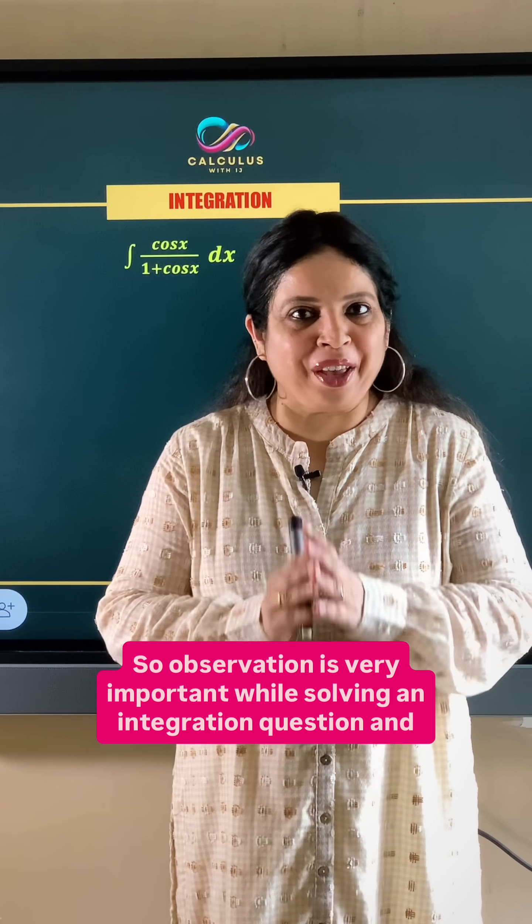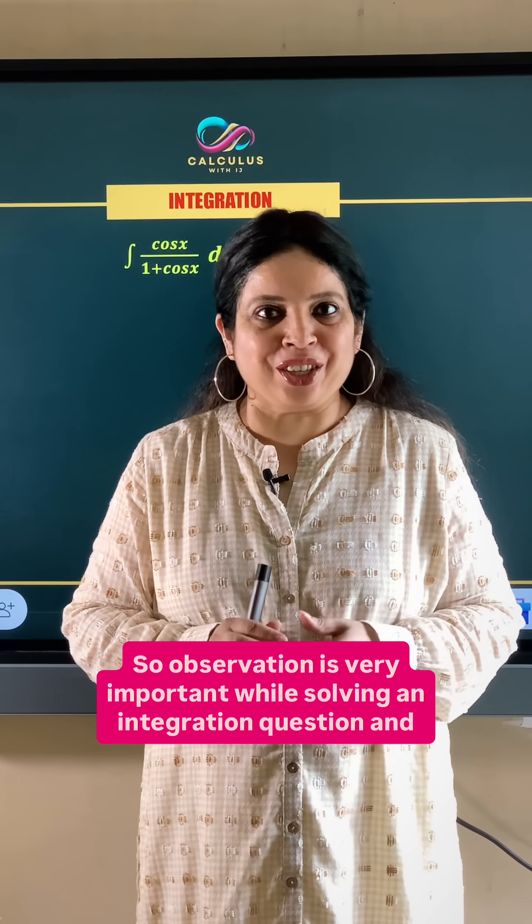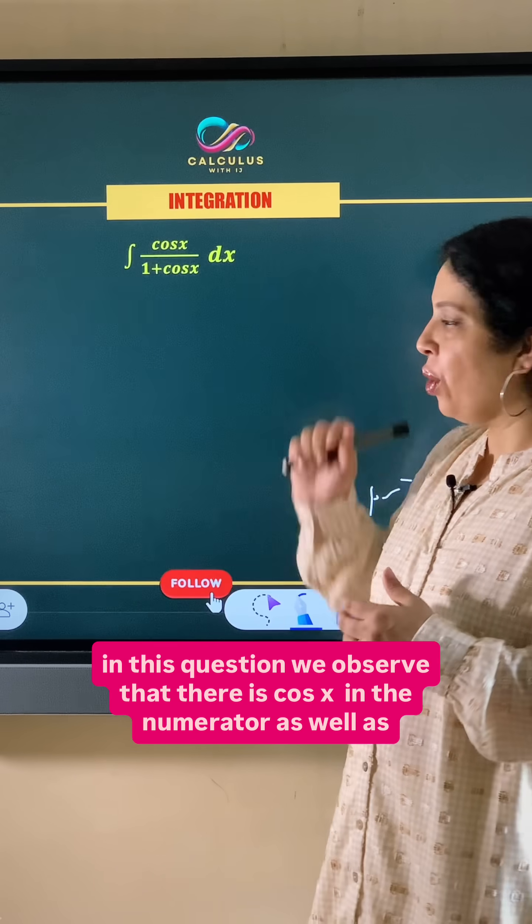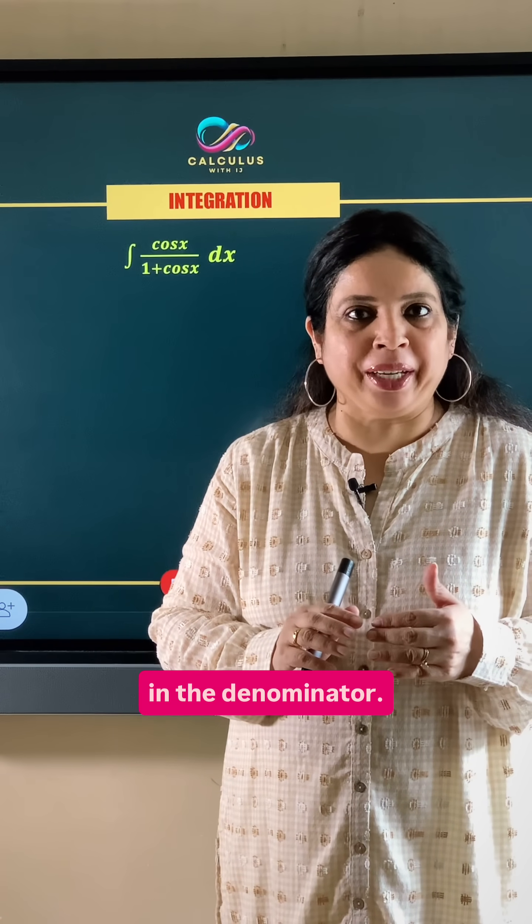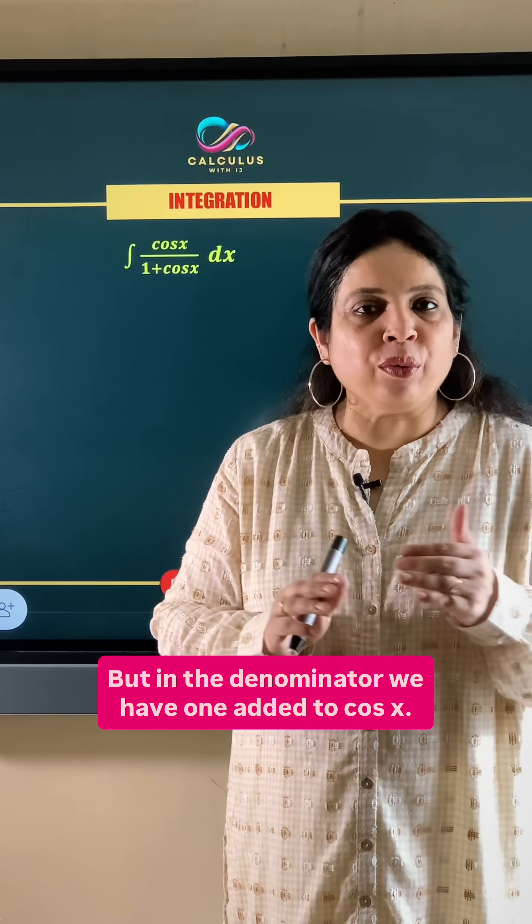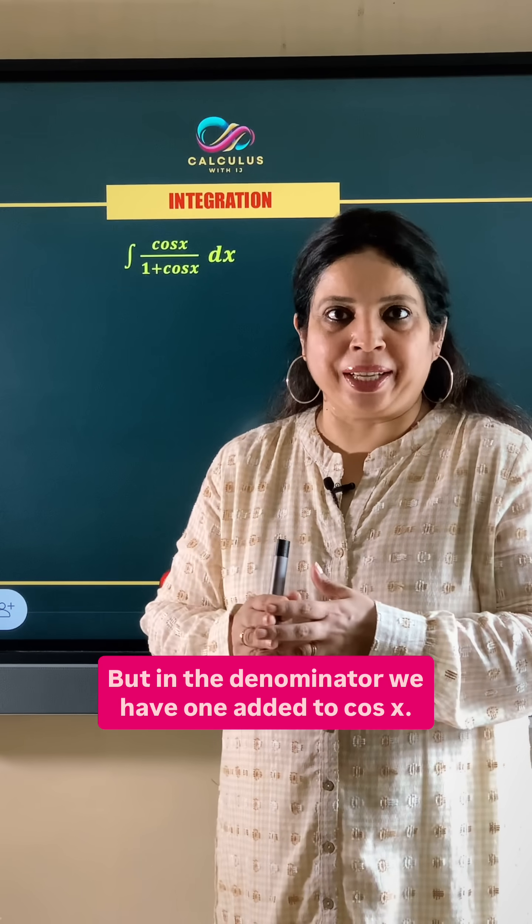Observation is very important while solving an integration question. In this question we observe that there is cos x in the numerator as well as in the denominator, but in the denominator we have 1 added to cos x.